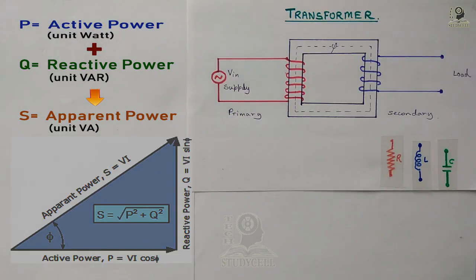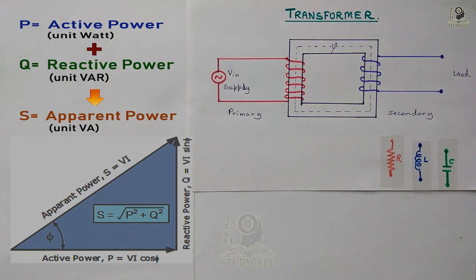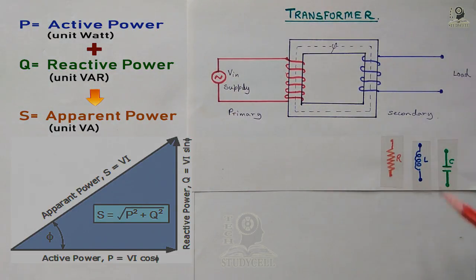When we design a transformer, we don't have any idea what type of load we are going to connect at the secondary. So we don't know the type of load. The load may be resistive, may be inductive, may be capacitive, or may be a combination of these three.